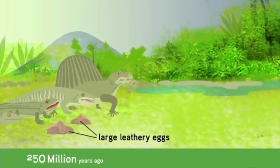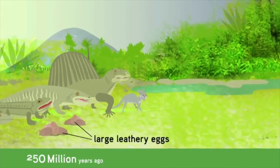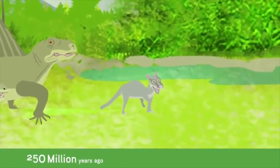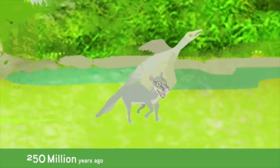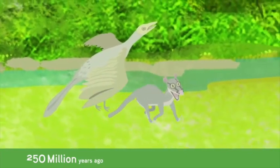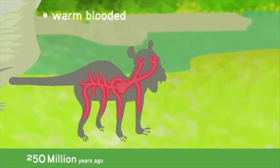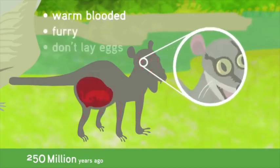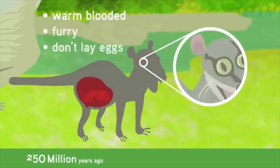Then, about 250 million years ago, the first mammals appeared on Earth, evolving from a branch of reptiles that loosely resembled birds. Mammals are warm-blooded. They are furry, and they don't lay eggs. And you and I are mammals.